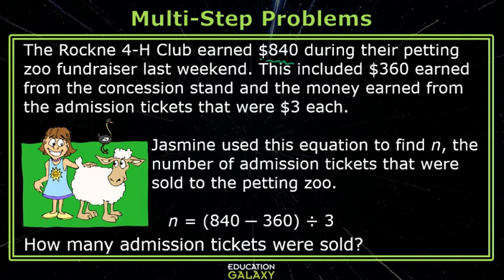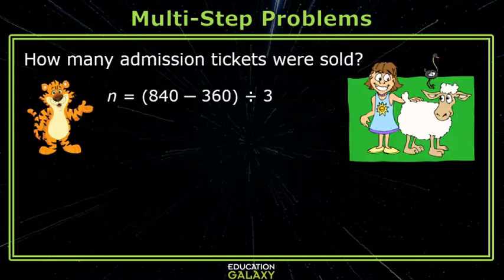Let's try another one. The Rock Me 4-H Club earned $840 during their petting zoo fundraiser last weekend. This included $360 earned from the concession stand and the money earned from admission tickets that were $3 each. Jasmine used this equation to find N, the number of admission tickets that were sold at the petting zoo. All we have to do is simplify this expression.